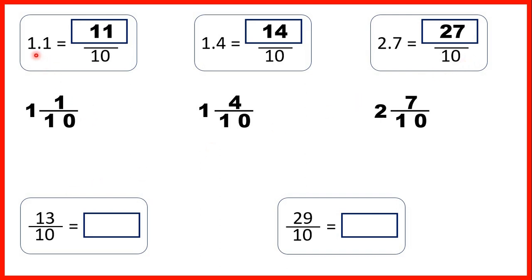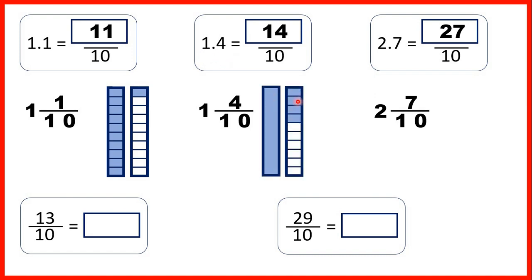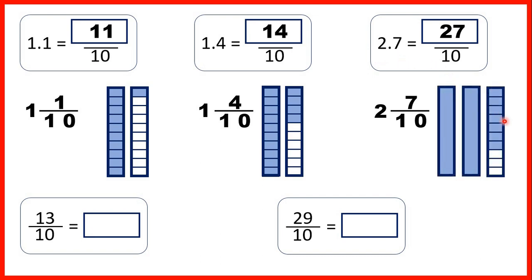To show what we have: 1.1 means one whole and one tenth, but we can split our whole into ten tenths, which means we have eleven tenths altogether. 1.4 means one whole and four tenths, but if we split our whole into tenths as well, we have a total of fourteen tenths. And 2.7 means two wholes and seven tenths, but if we split each whole into tenths, we have twenty-seven tenths altogether, because each whole can be split into ten tenths.